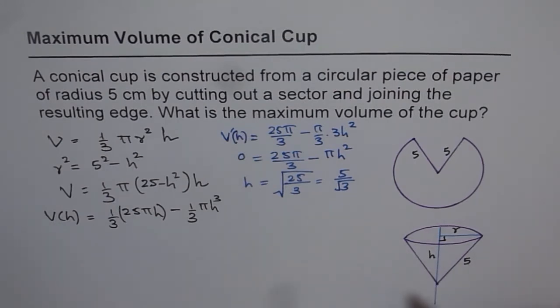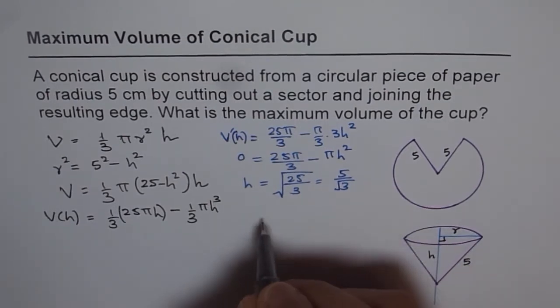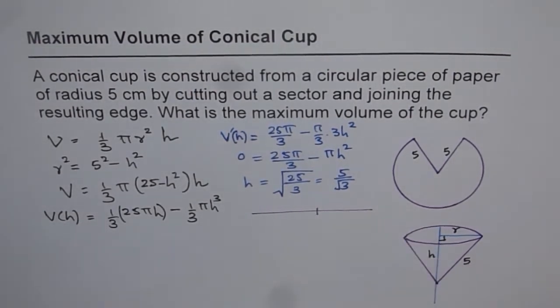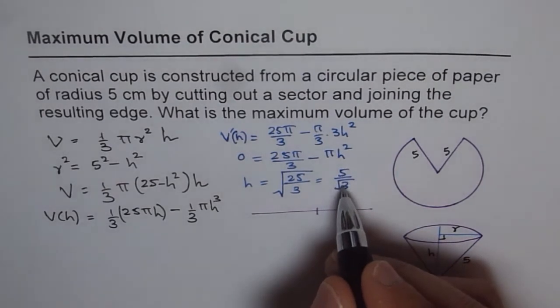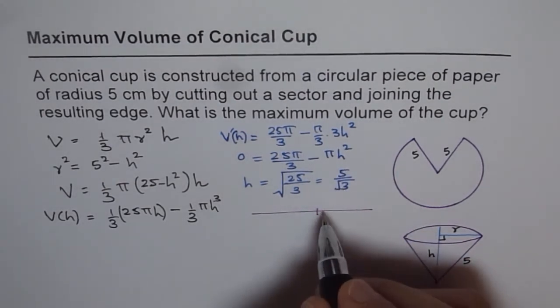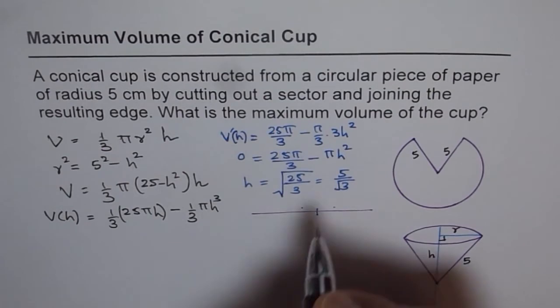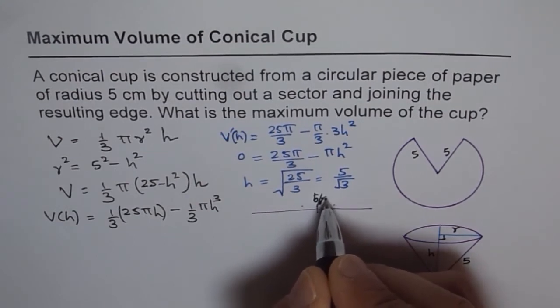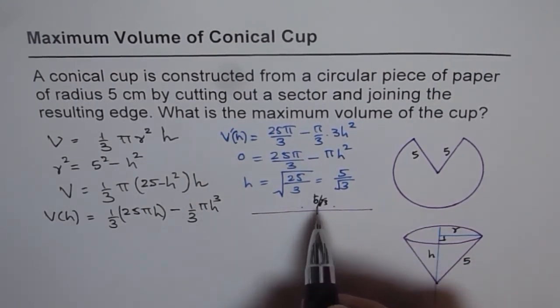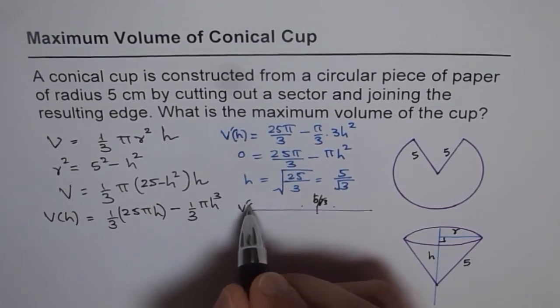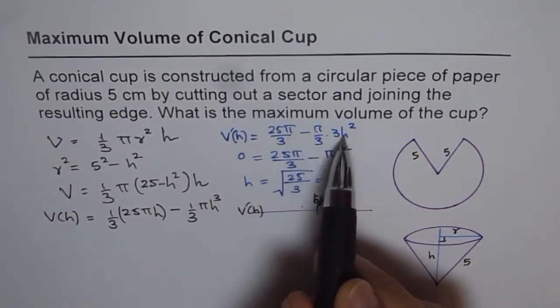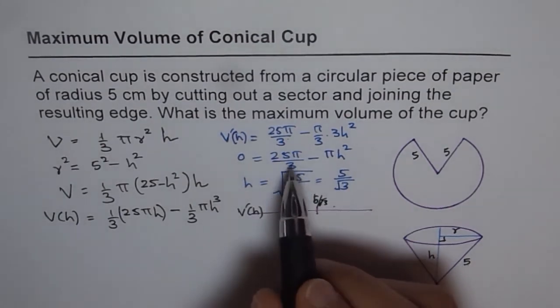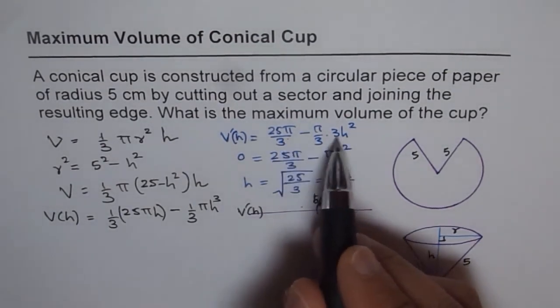Now how are you sure whether this is indeed a maximum volume? So we'll do first derivative test to ensure that this is indeed the maximum volume. So for that, let's take a point which is h equals to 5 over square root of 3, and let's take a point on right and left side of this. Now, and we'll check what happens to v dash h, which is this expression.